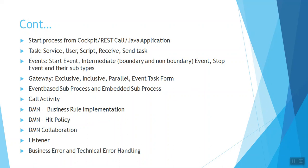We'll cover gateways in detail, then event-based sub-processes and different types of sub-processes: embedded, call activity, transactional sub-process. For DMN — business rules — we'll discuss how to implement business rules and how to decide hit policies: any, first, collect, or priority. We'll have a good discussion on deciding which hit policy to use.